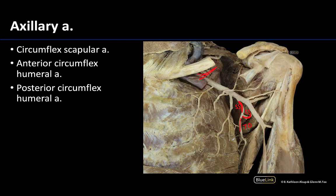Another set of branches from the axillary artery to identify are the circumflex humeral arteries, which wrap around the surgical neck of the humerus. The anterior circumflex humeral artery is the smaller one and wraps anteriorly. The posterior circumflex humeral artery is the larger one, wraps posteriorly around the surgical neck, and has a close relationship with the axillary nerve. These circumflex humeral arteries typically anastomose with each other as well.